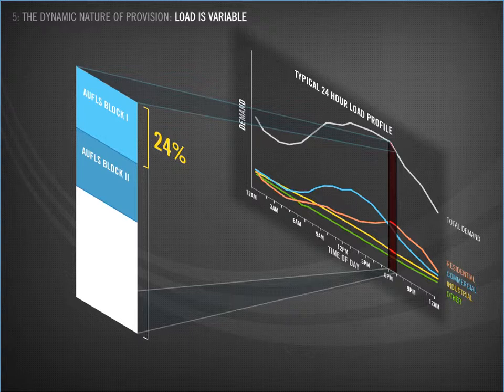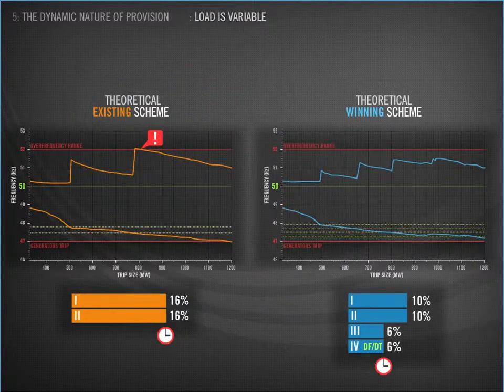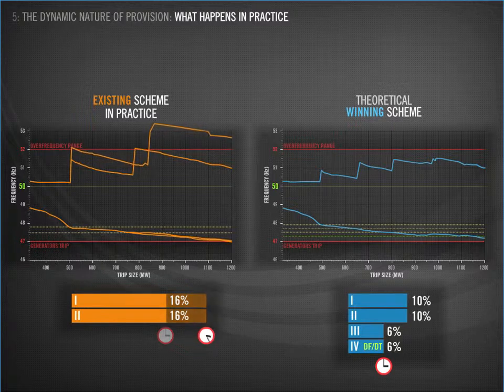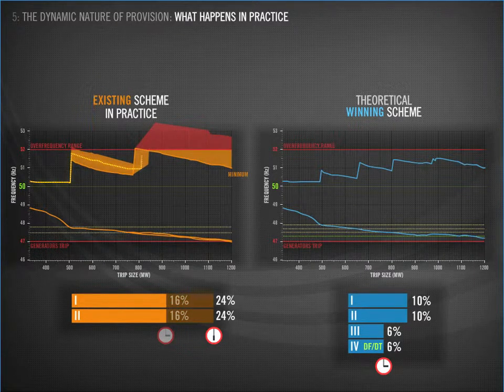Although this is just an example, you can see that at certain times of the day, AUFLS can represent around 50% of the total demand in that area, rather than the expected 32%. At the bottom of the screen, notice how the clock is changing to reflect how the load is changing throughout the day. The peak increases, in this case, to 24%.